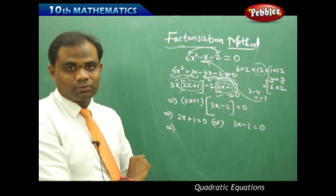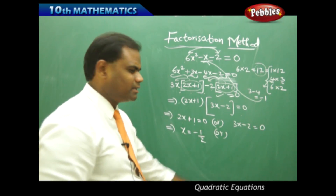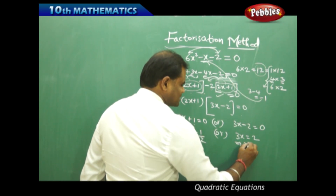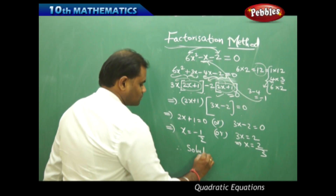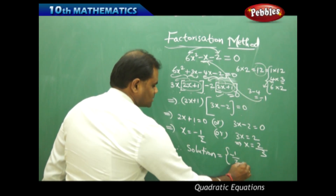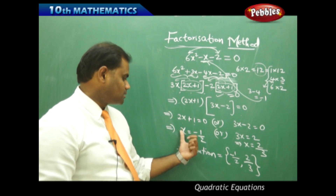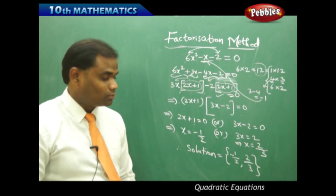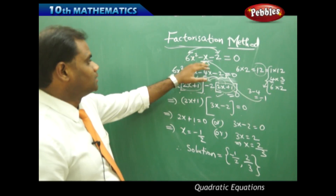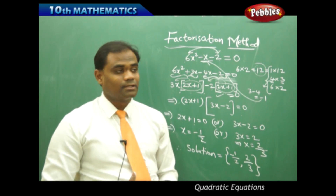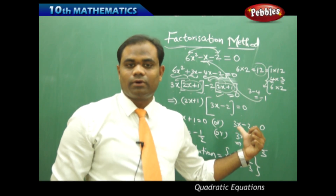When 2x plus 1 equals 0, x equals minus 1 over 2. When 3x minus 2 equals 0, then 3x equals 2, so x equals 2 over 3. Therefore, the solutions of the given problem are x equals minus 1 over 2 and x equals 2 over 3 — the required solutions of the equation x minus 1 over 3x equals 1 over 6, solved using the factorization method.